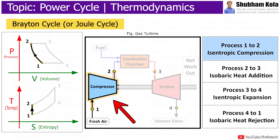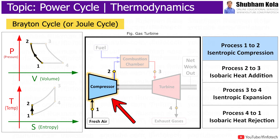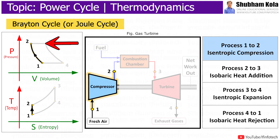Process 1 to 2 is isentropic compression, where the working gas is compressed adiabatically from state 1 to state 2 by the compressor. Here, the surroundings do work on the gas, increasing its internal energy and compressing it, while entropy remains unchanged. A rise in temperature occurs due to compression, and since it is a compression process, the volume of the gas decreases.